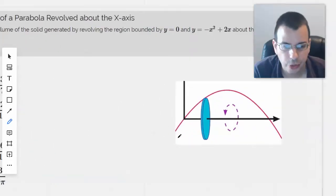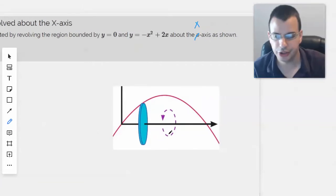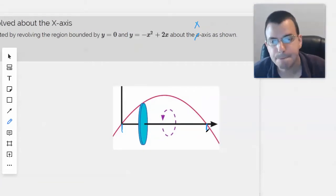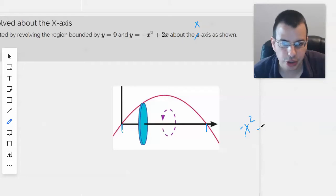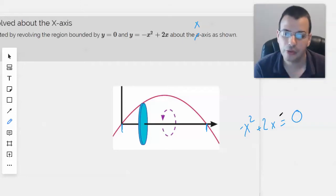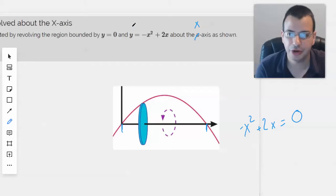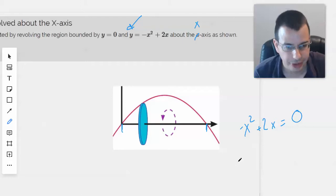Okay, so the first thing we'll want to do here is probably want to find these intercept points. So we'll do negative x squared plus 2x equals 0. Right, so this is y equals this. We'll find out where y equals 0.